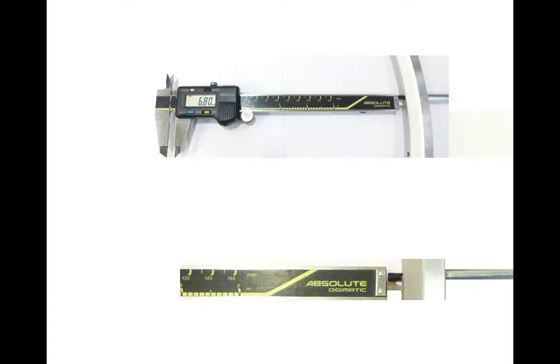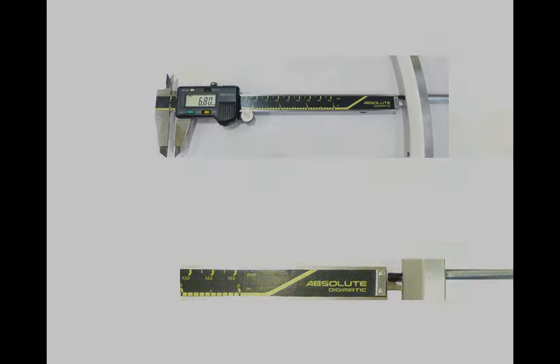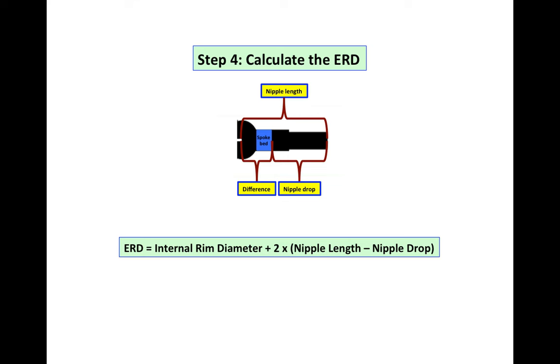Here I can use the depth gauge of my caliper to read the nipple drop, which in this case is 6.8 millimeters. My ERD is the internal rim diameter plus two times the nipple length minus the nipple drop, which is two times the difference.